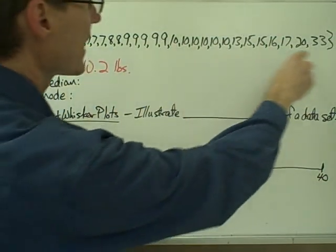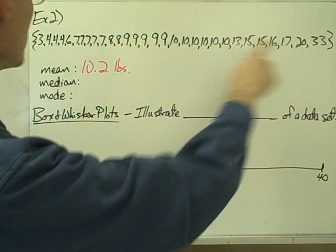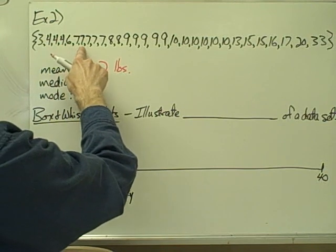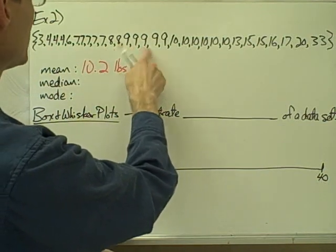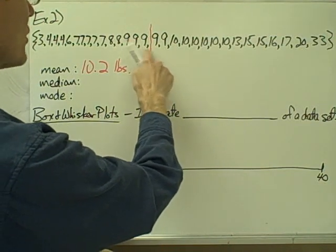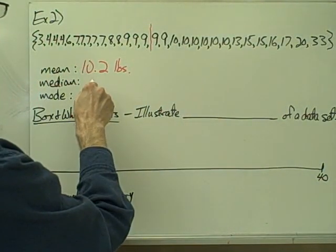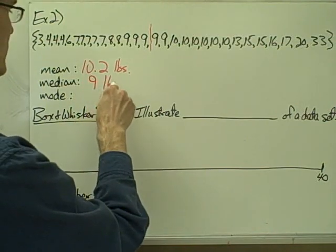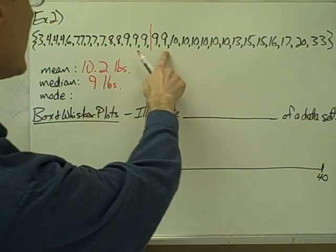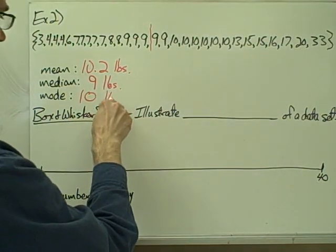If I type all 30 numbers into a list in my calculator and calculate the mean, I get 10.2 pounds. For the median, since all data points are already in order from least to greatest, I need to find the middle value. With 30 values, I have 15 in the top half and 15 in the bottom half. My 15th value and 16th value are both 9, so my median is 9 plus 9 divided by 2, which is 9 pounds. For the mode, I see five sevens, five nines, and six tens — so my mode is 10 pounds.